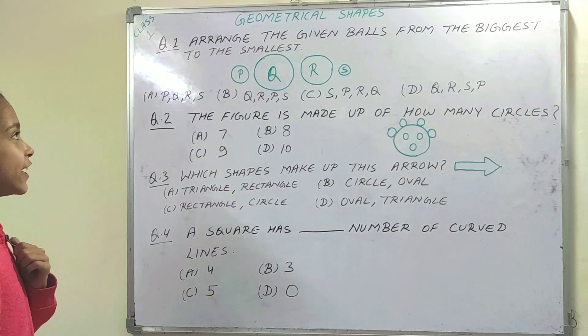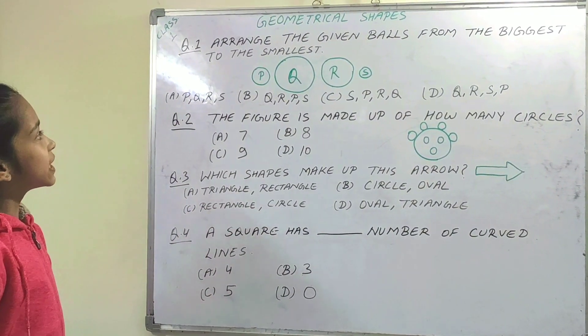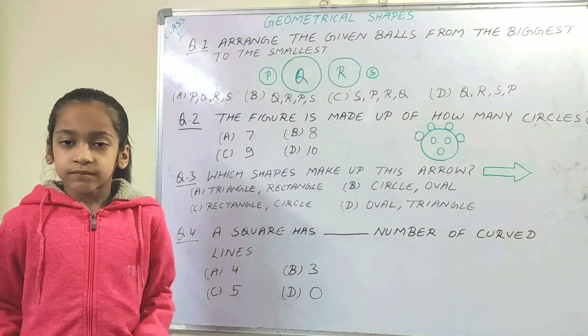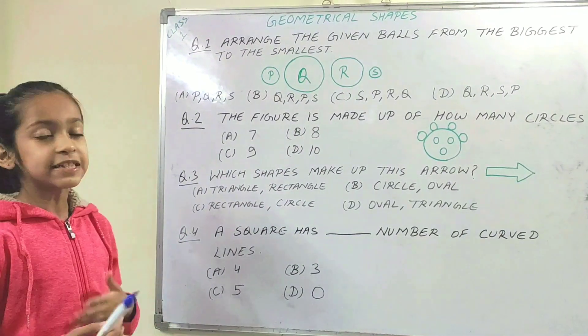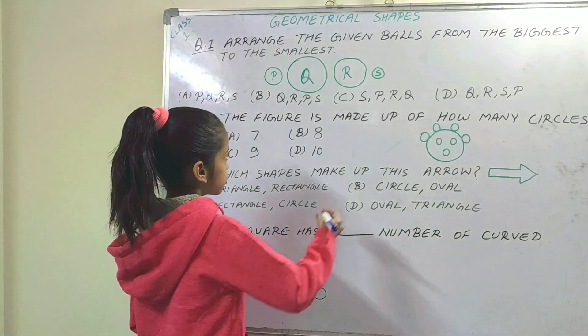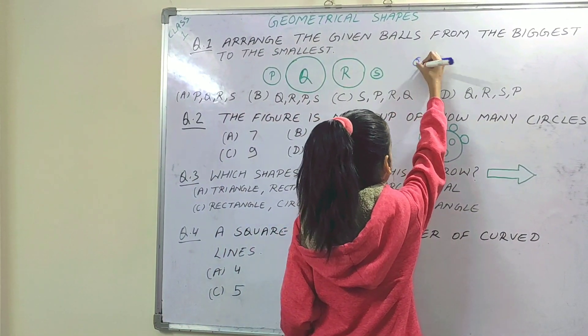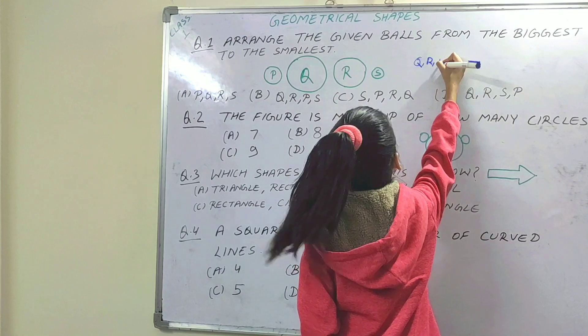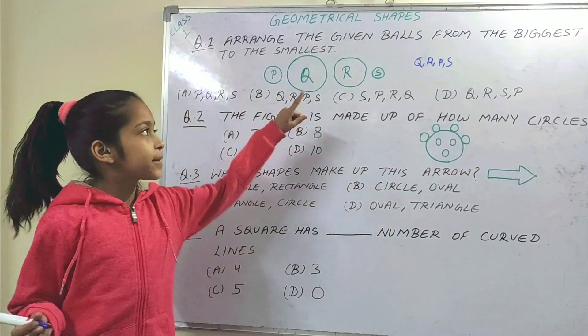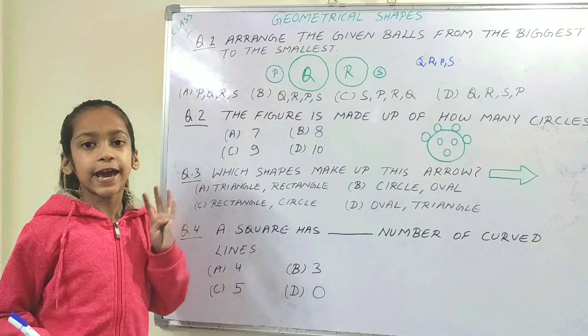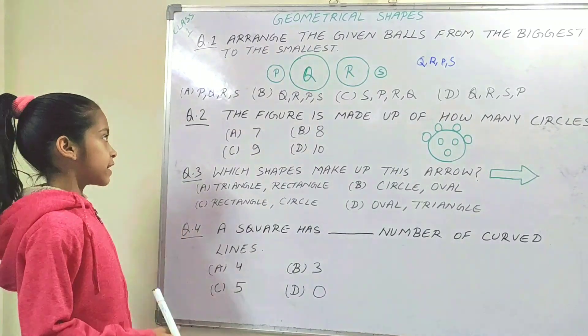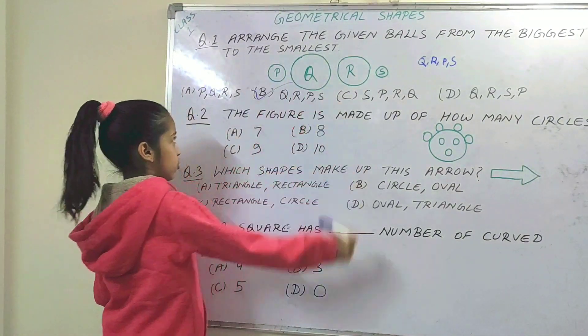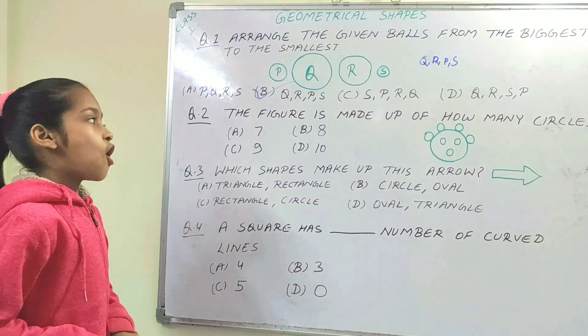First question. Arrange the given balls from the biggest to the smallest. So now arrange the balls in biggest to smallest range. This is the biggest Q, then the smaller R, then the smaller P, and the smallest S. Now this order Q, R, P, S, which is the option? That is option B. So option B is the right option.